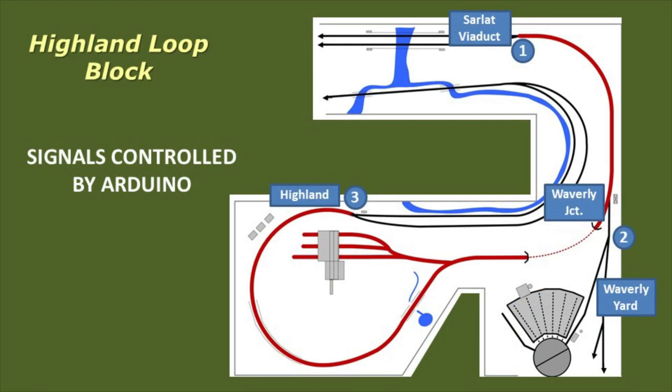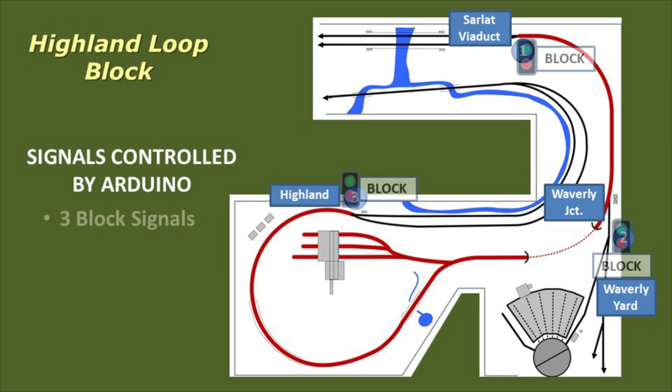You saw the mess of signals we had before — seven signals in total. Now let's look at the signals after the Arduino is installed. We still need to have a block signal at each of the entry-exit points.